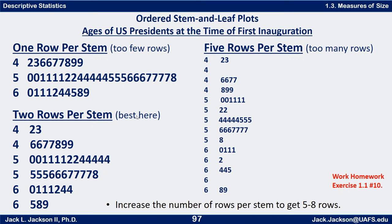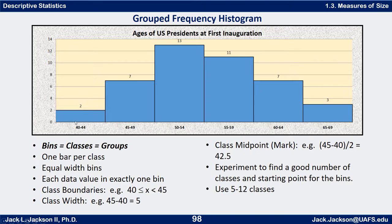Notice that this also corresponds to a grouped frequency histogram if we made a bar graph from it. Let's take the two-rows-per-stem version — lower 40s, upper 40s, lower 50s, upper 50s, and so forth — and make a grouped frequency histogram for that. There are two in the lower 40s, seven in the upper 40s, and so forth. So 40 to 44 there are two of those, 45 to 49 there are seven, and so forth. This gives us a nice grouped frequency histogram.